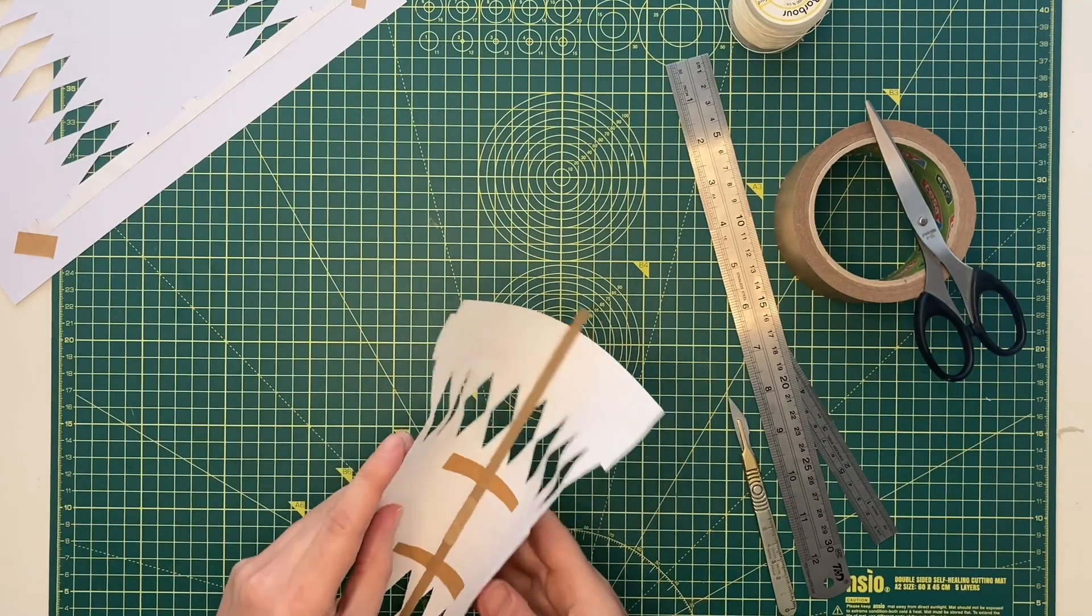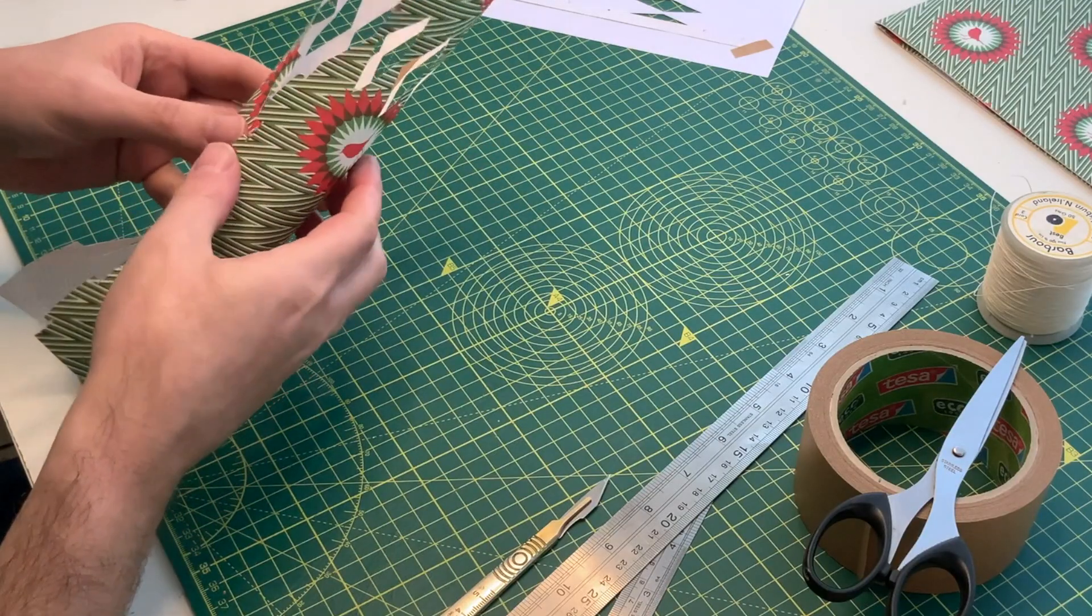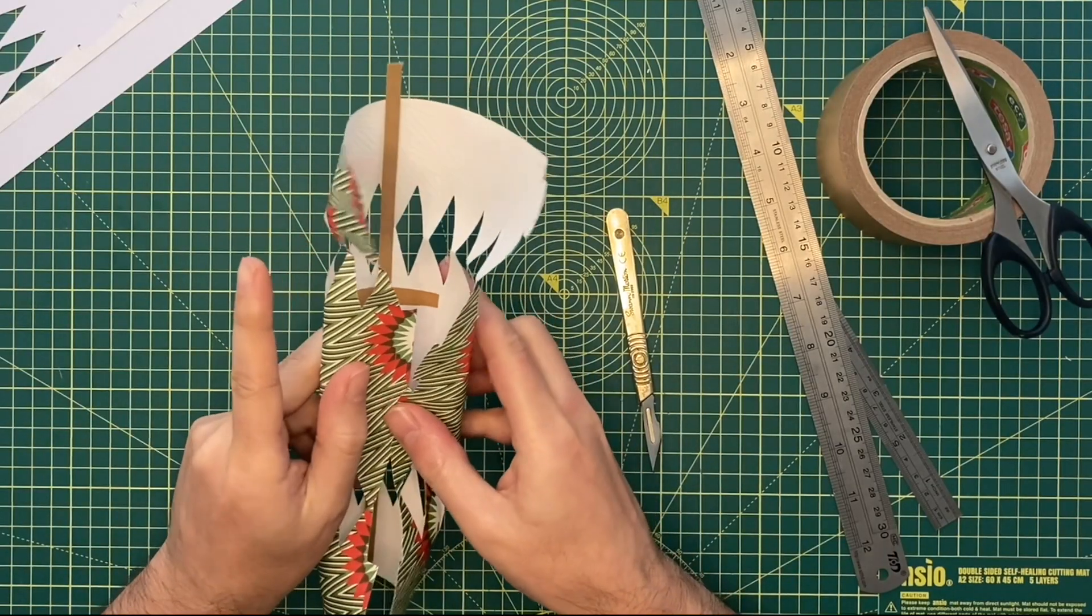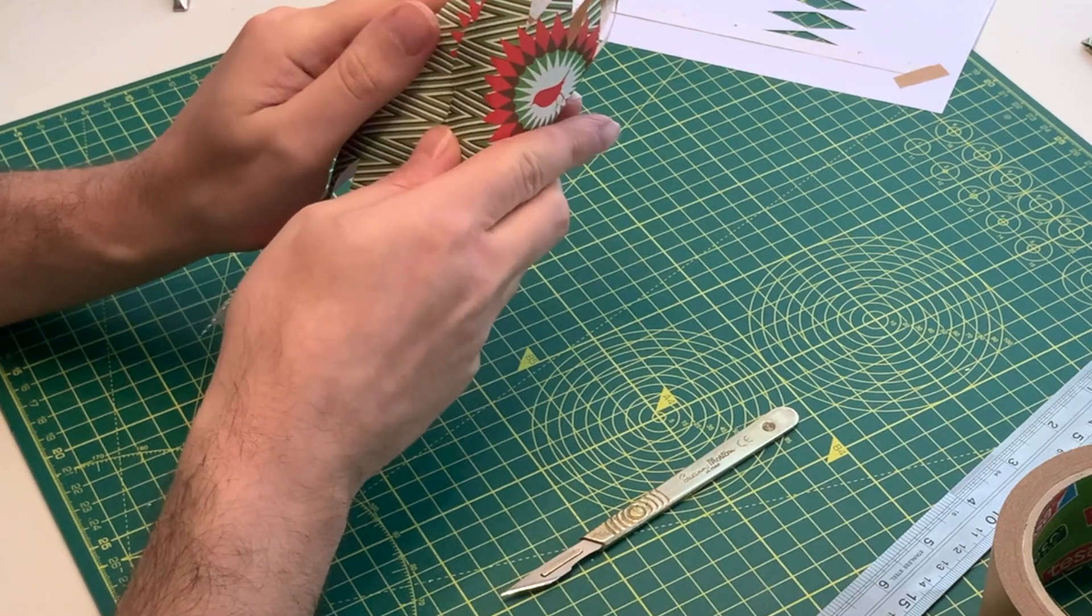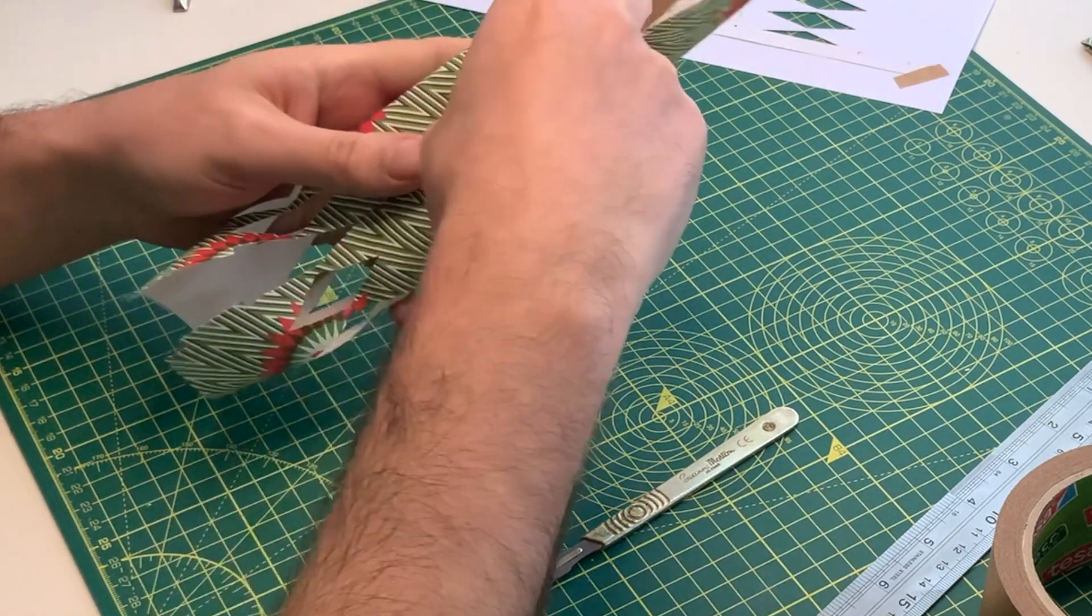Carefully roll the wrapping paper around, tucking the individual nodes into their corresponding slits. Make sure the nodes are slotted from the outside in.